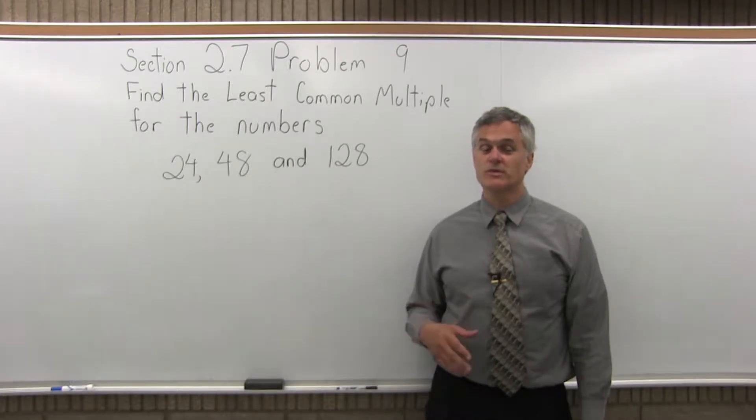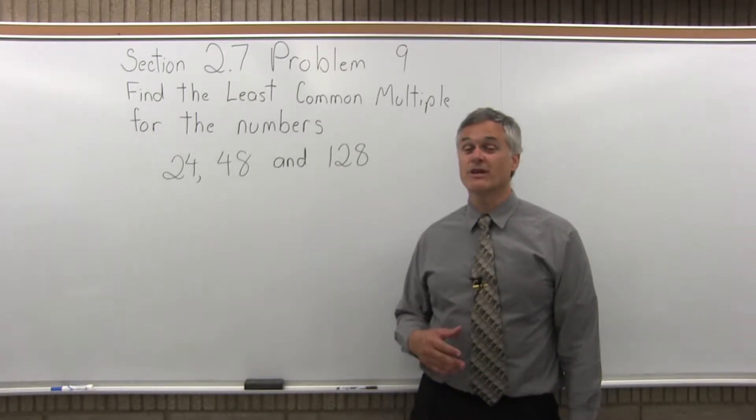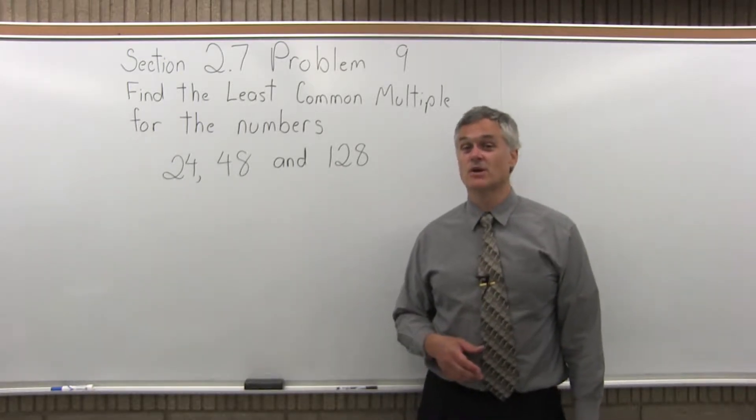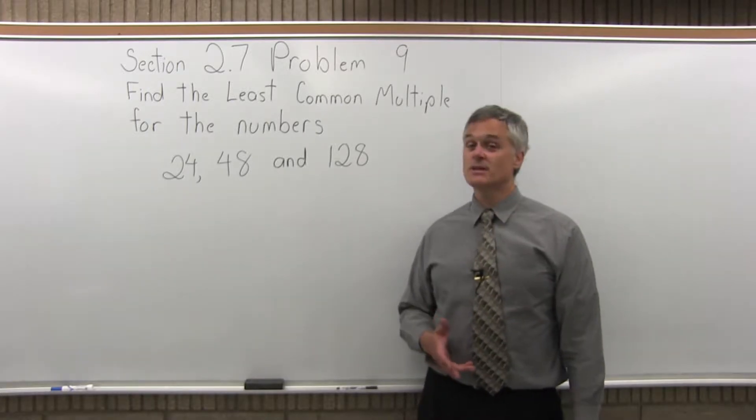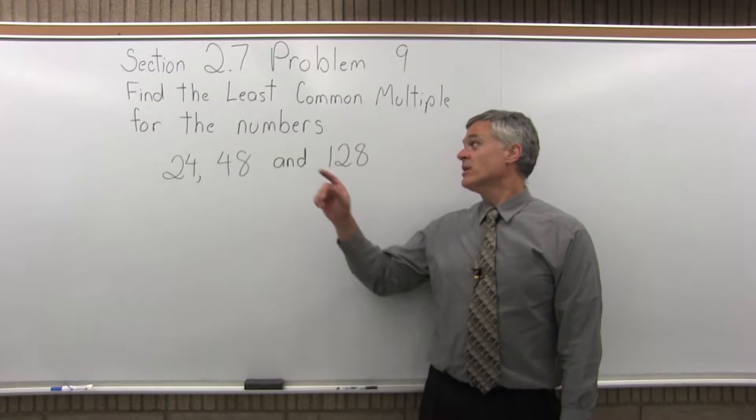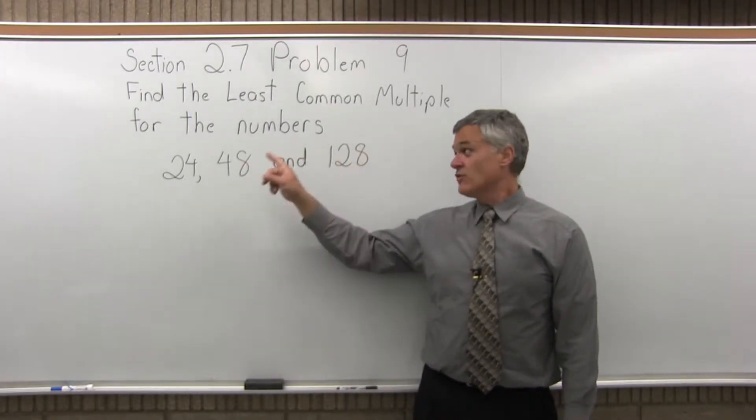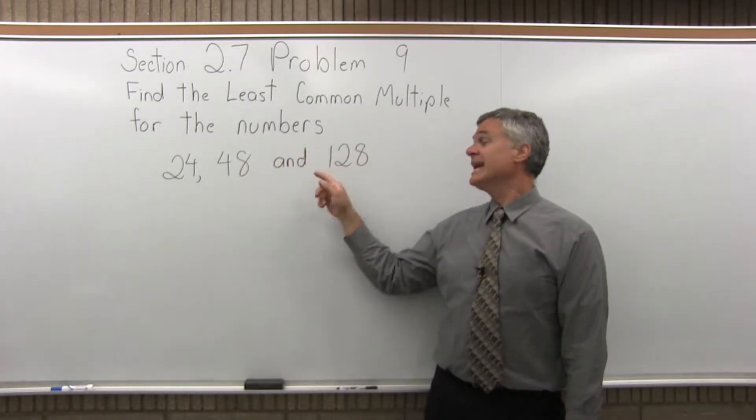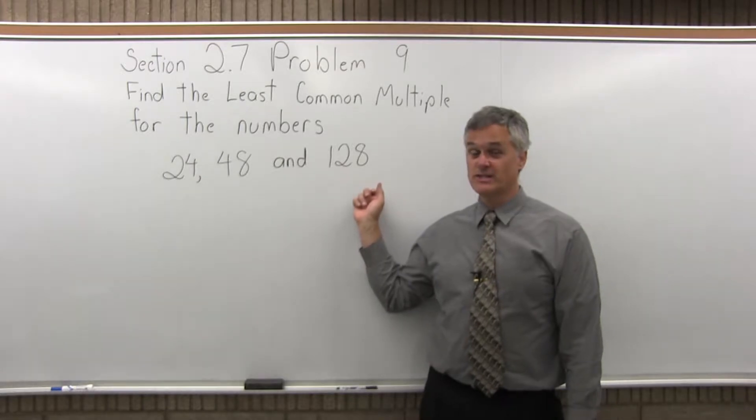What makes this problem different from previous problems is that we have three numbers to find the least common multiple for. But it's really the same process. We want to find the smallest number that 24 divides into evenly, 48 also divides into evenly, and 128 also divides into evenly.